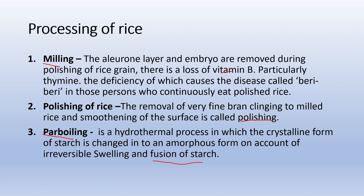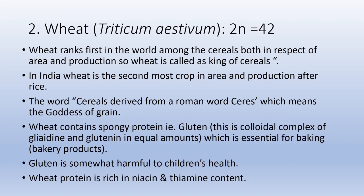The next topic is wheat. Its botanical name is Triticum aestivum and its chromosome number is 2n = 42. Wheat ranks first in the world among cereals in both area and production — hence it is called king of cereals. In India, wheat is the second most important crop in area and production after rice. Wheat contains a spongy protein known as gluten, which is a colloidal complex of gliadin and glutenin in equal amounts, essential for baking and bakery products.